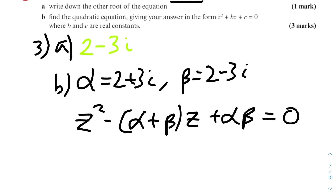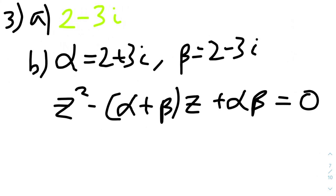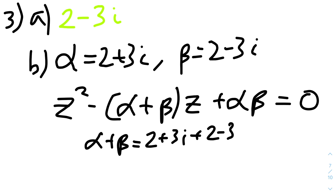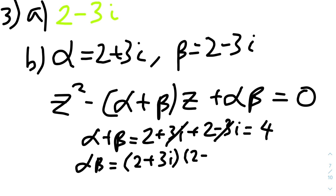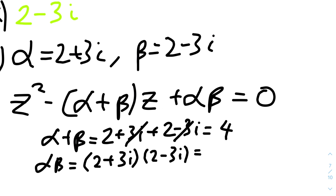So we can find what alpha plus beta is. Alpha plus beta is 2 plus 3i plus 2 minus 3i — the 3i terms cancel out, leaving just 4. And alpha times beta equals 2 plus 3i multiplied by 2 minus 3i. Using the difference of squares rule, that's 2 squared plus 3 squared, so 4 plus 9, which equals 13.